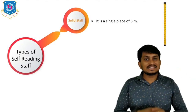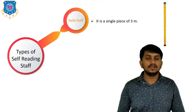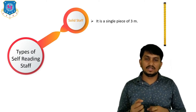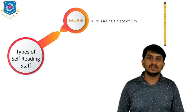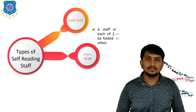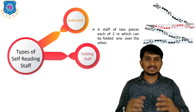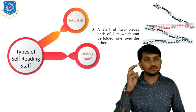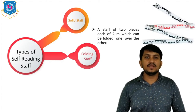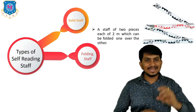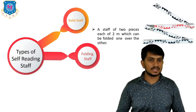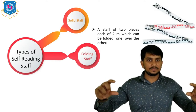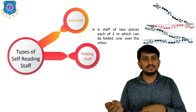The self-reading staff is of various types. First is the solid staff — it is a single piece of three meters; its length cannot be adjusted. Second is the folding or foldable staff — a staff of two pieces each of two meters, which can be folded one over the other by a hinge. Its overall length is four meters but the carrying length is about two meters.